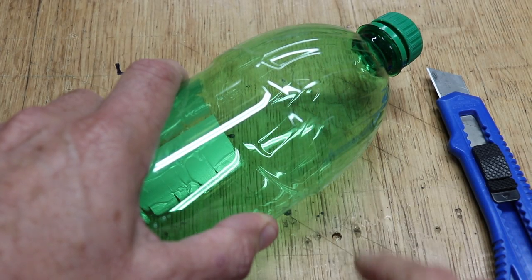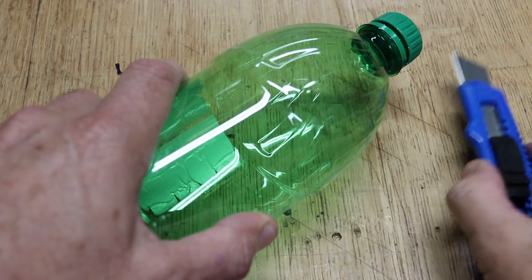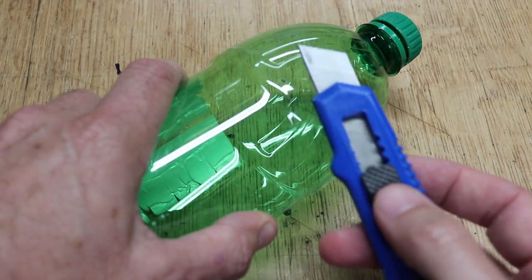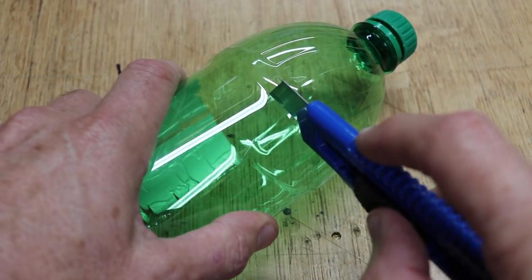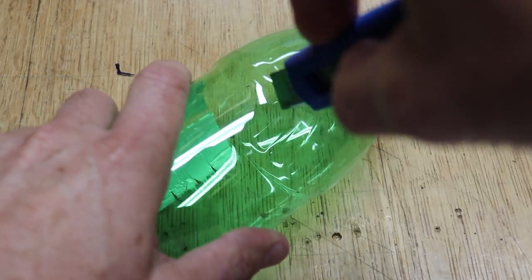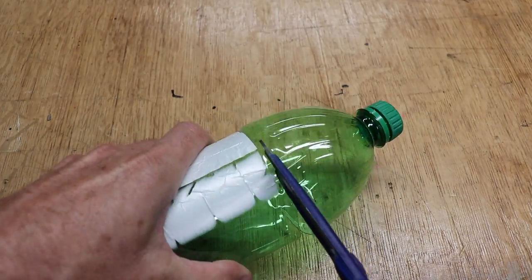These pop bottles are easy to cut; it's just getting started that's the hard part. Take a utility knife with a nice sharp point on it, put it on the bottle and start rocking it back and forth, and it'll push right through the plastic. Now just take a pair of scissors and cut the rest.